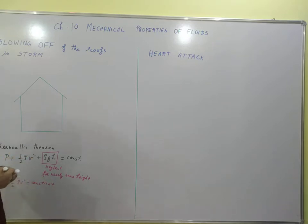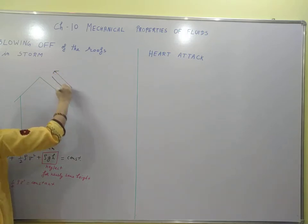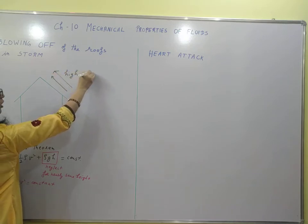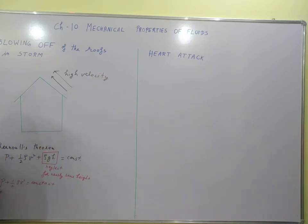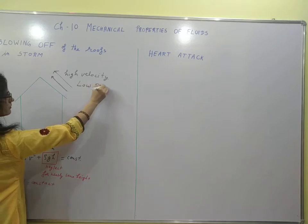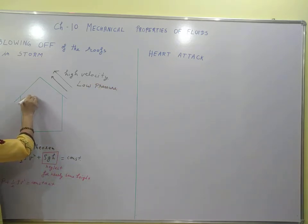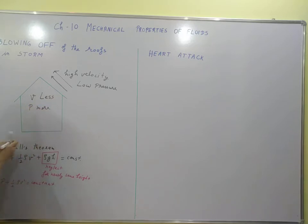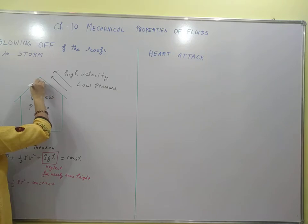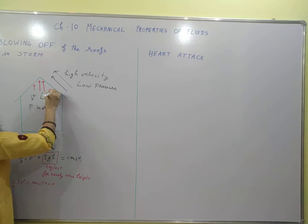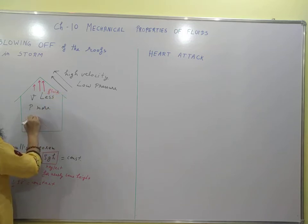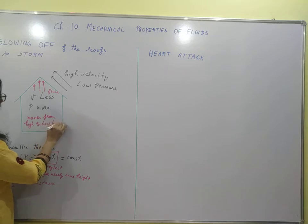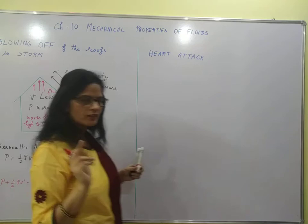During a storm, outside the roof the velocity of air is high. High velocity results in low pressure according to Bernoulli's theorem. Inside, the velocity is comparatively less, so the pressure is more. Since fluid moves from high pressure to low pressure, the roof will be blown off.